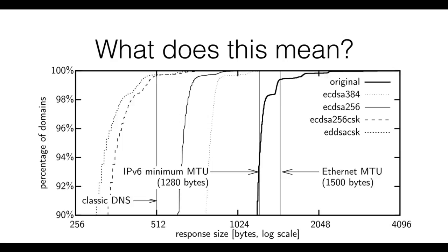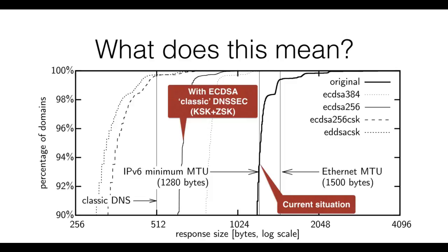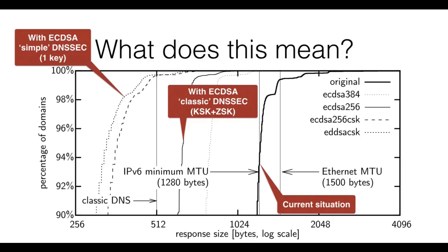This graph shows the effect for DNSKEY responses, which as you may remember are the hardest problem in DNSSEC, since they are integral to the protocol and cannot easily be blocked. The thick black line on the right shows the current situation where RSA is used for signing. Up to 10% of responses are so large that they might be fragmented over multiple packets. Looking at the most common ECC implementation, the response size is dramatically reduced to less than half that of RSA — and note the x-axis has a logarithmic scale. We can further improve this: because ECC provides stronger security, we can simplify the signing model and use a single key instead of two. This reduces DNSKEY response sizes to such an extent that they might even fit in classic DNS packets of 512 bytes or less.